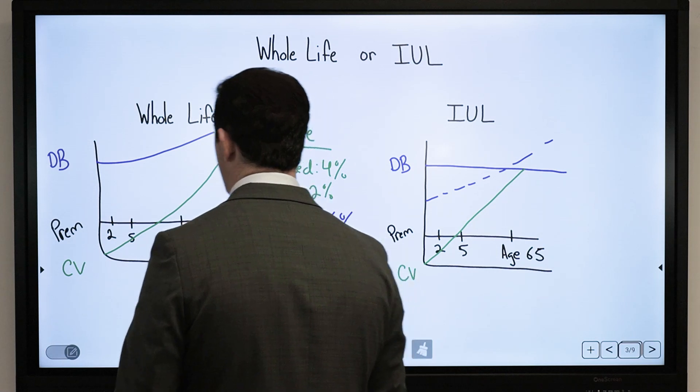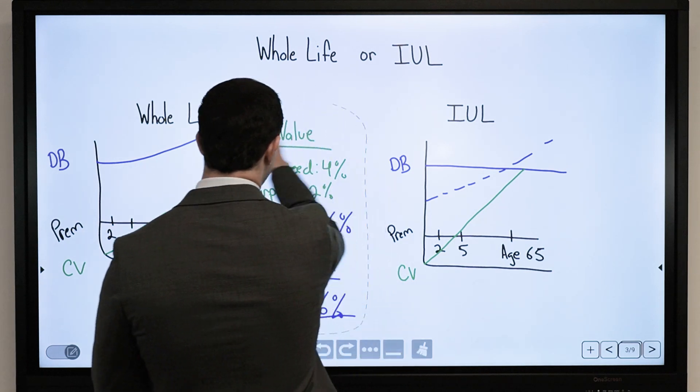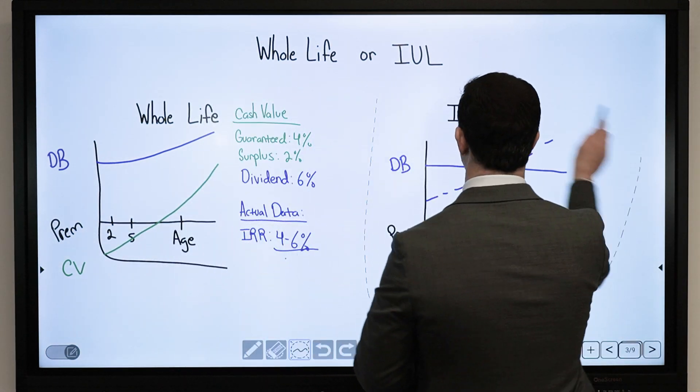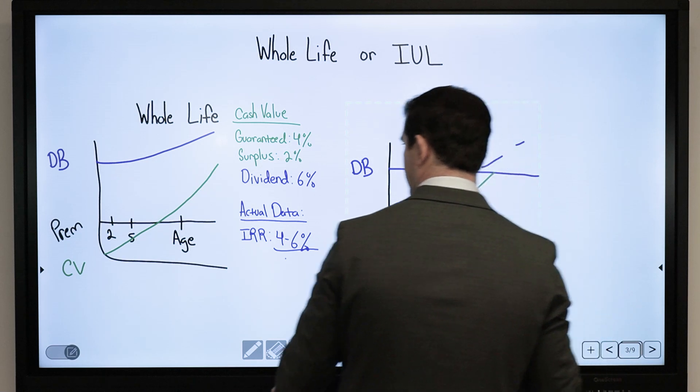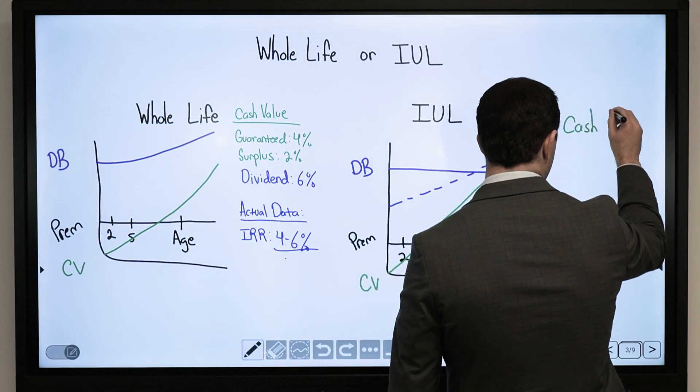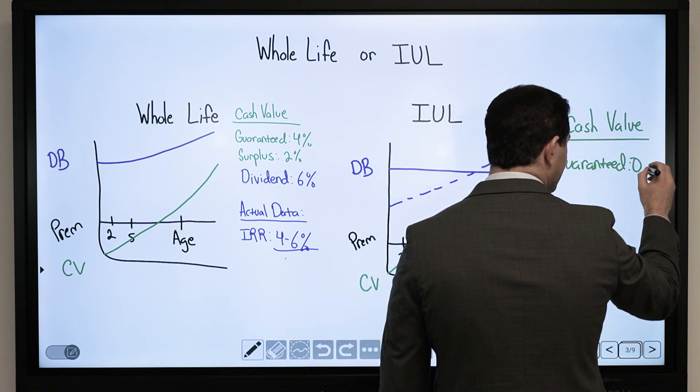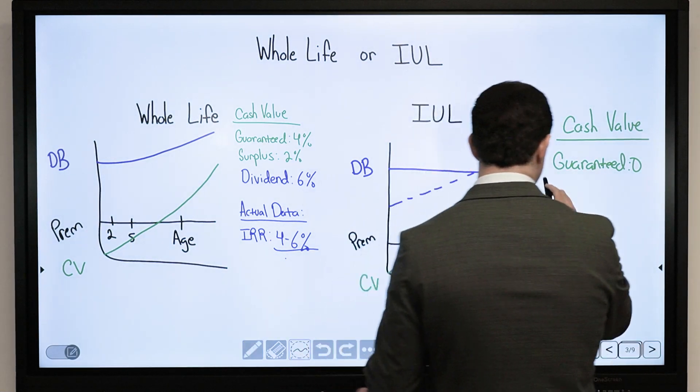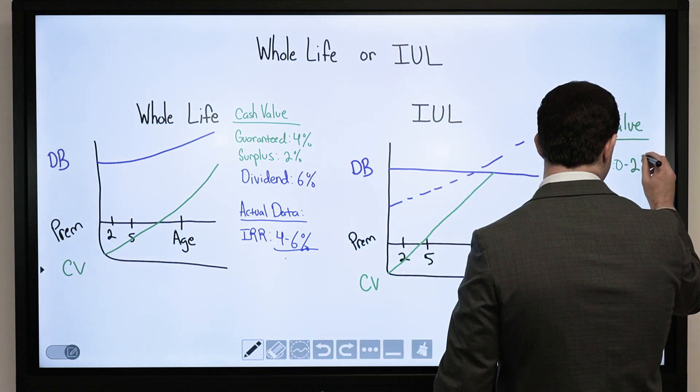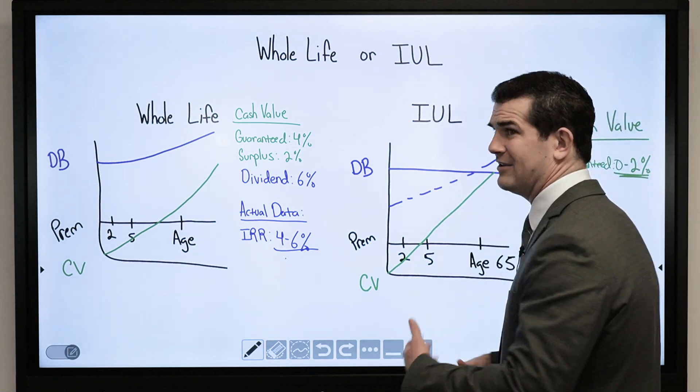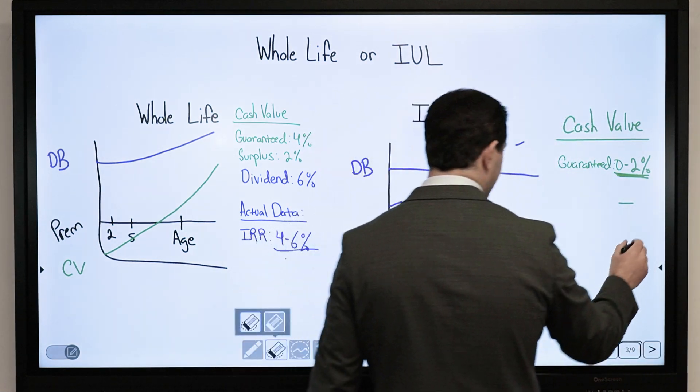The cash value is always projected to grow at a faster rate than whole life insurance. Here's why. What you get with an IUL that is different from whole life is as follows: You have a guaranteed rate, often 0%. That's not always the case, it depends on the insurance carrier. Some might go up to 2%. Typically you have a guarantee of 0% with a lot of companies.